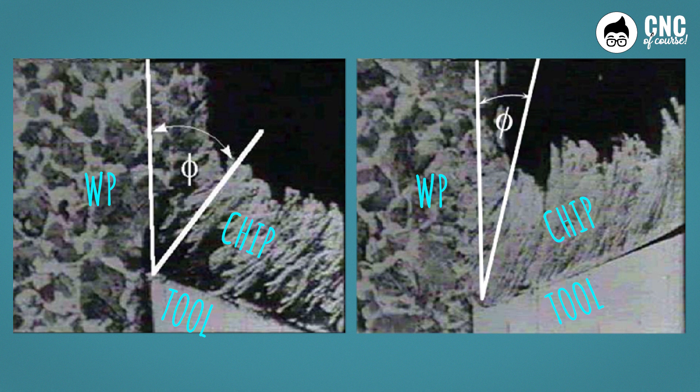As soon as the chip makes contact with the face of the tool, it will assume a direction identified by the symbol phi, which, to be precise, indicates the shear angle. Different rake angles result in different shear angles.